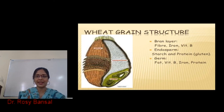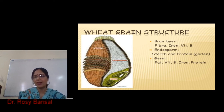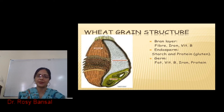Regarding the wheat grain structure: the bran layer is rich in fiber, iron, and vitamin B. The endosperm contains a good amount of starch and proteins, mainly gluten. The germ is very rich in fat, vitamin B, iron, and proteins.